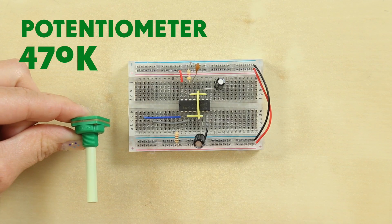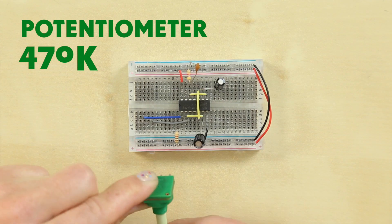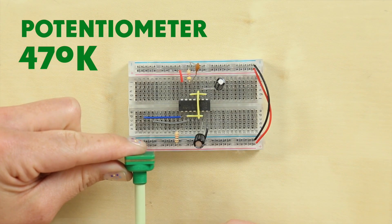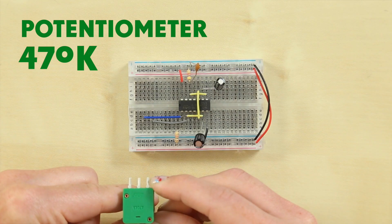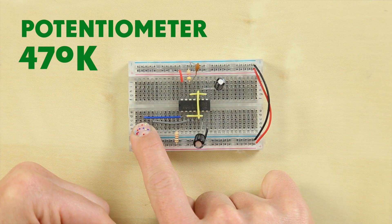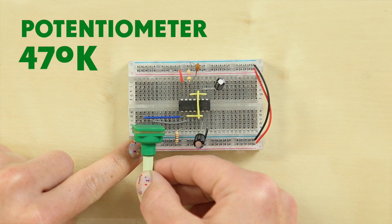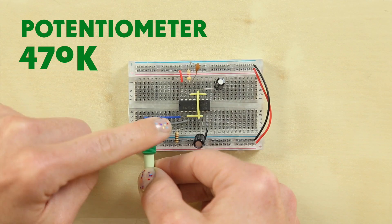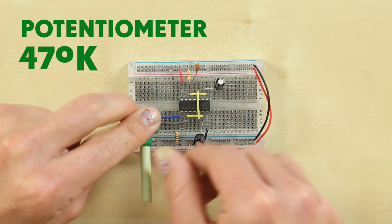Now take your first 470K potentiometer and place it on the board with the shaft facing outwards. Make sure that the right-hand and middle legs line up with the end of the gray wire and end of the blue wire in your board. This means the middle one should line up with row 3 and the right-hand one should line up with row 5.